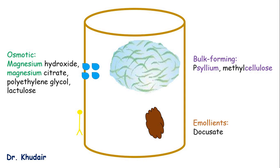Next, we have the emollients, or the stool softeners, like docusate. Docusate disturbs the surface tension at the surface of the stool, allowing the incorporation of water and fat into the stool, making it softer.